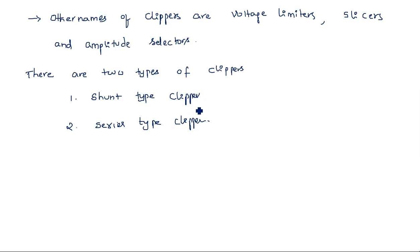How can you distinguish these two clippers? The name is given based on how the diode is connected in the circuit. The three components used are a diode, resistor, and reference voltage. If the diode is in shunt with the output voltage, that configuration is known as a shunt type clipper. If the diode is in series with the output voltage, that configuration is known as a series type clipper.